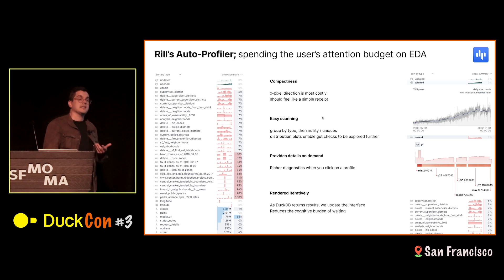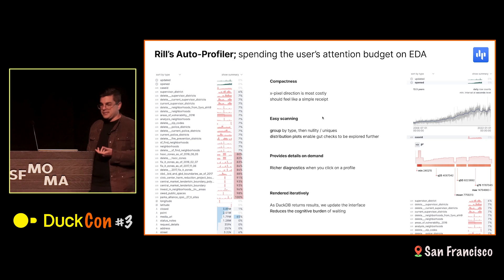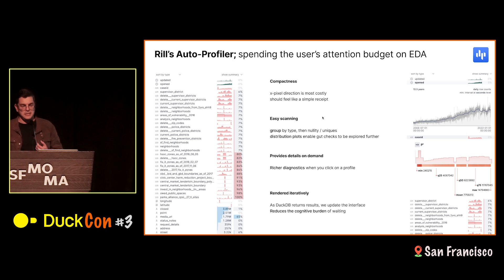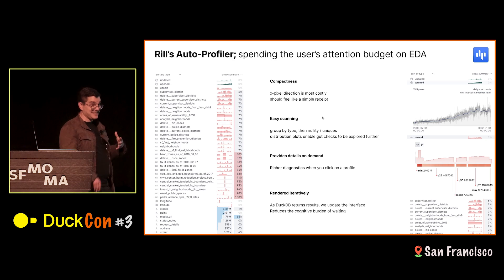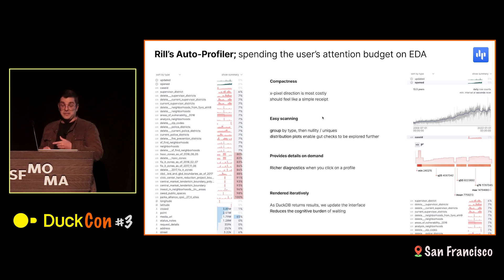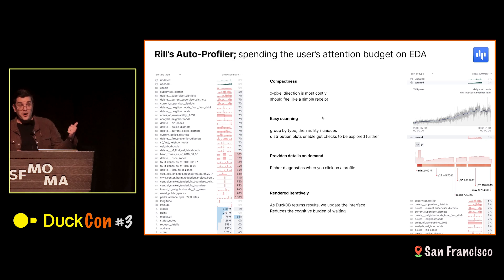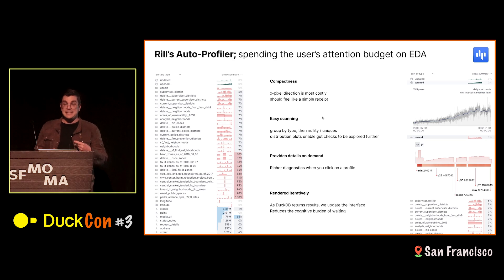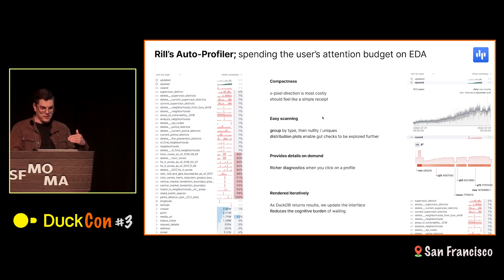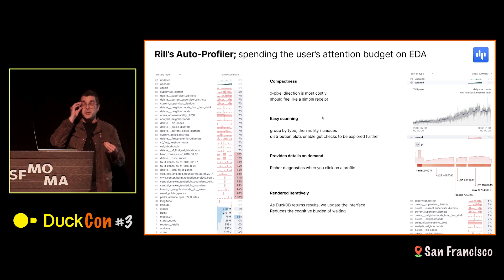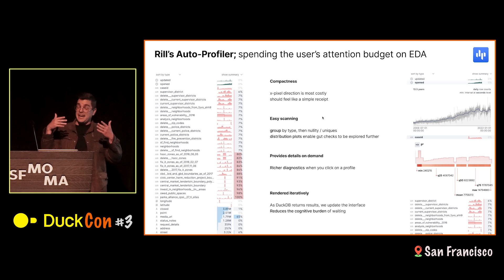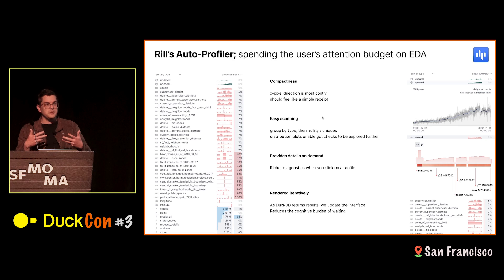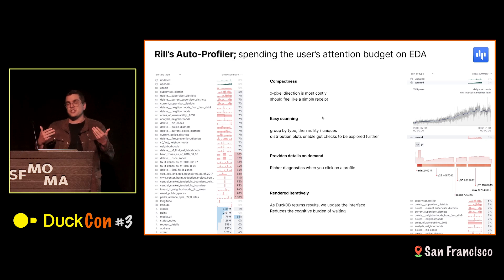A column profile is sets of distributions and summary statistics that helps the user understand the structure and problems with their data. It's organized around four principles. Compactness — it has to read like a grocery receipt because you don't have a lot of space. Easy scanning — it's really hard to identify problems in your data set unless you make it easy to almost pre-perceptually see what's going wrong. We provide details on demand: if you click on one of the column profiles, it expands to something much richer. And finally, it's all rendered iteratively — each profiling query streams back to the browser and we update as things are computing. It looks cool, and it helps the user see the computer is actually doing something, not just showing a spinner.